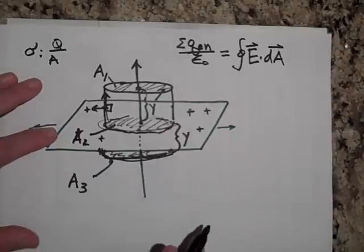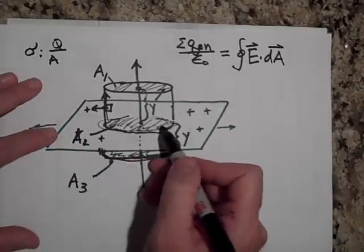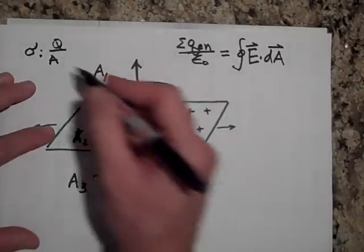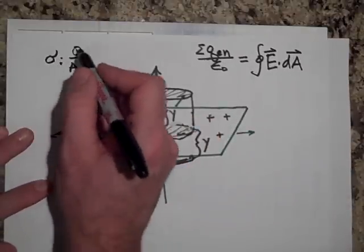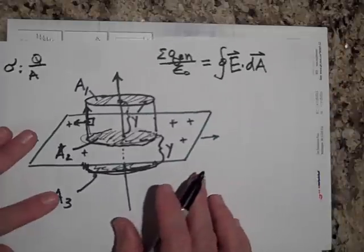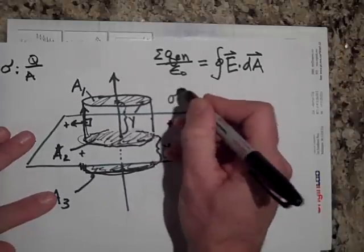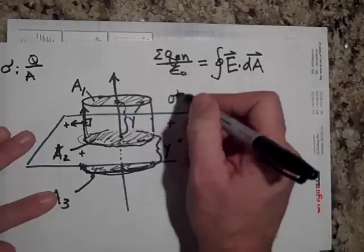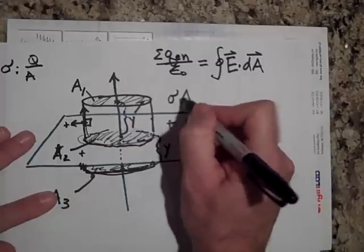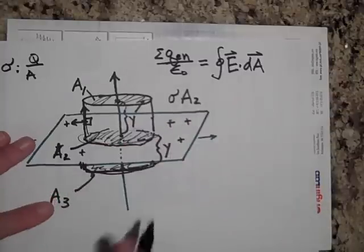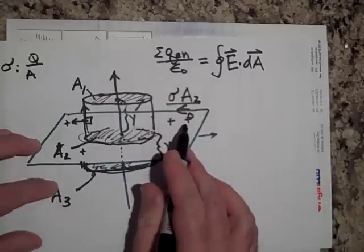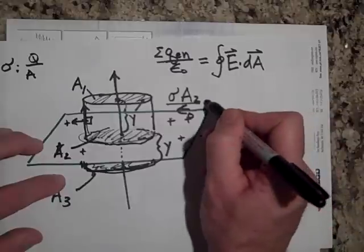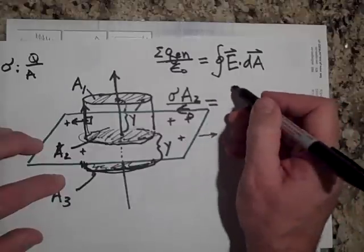Okay. Well, the charge enclosed is just this charge. And so that's going to be sigma times A. You see how if I bring the A over here, that gives me Q. So sigma times A, but it's going to be sigma times A2. That's the A that I want to use all over epsilon naught. That's an epsilon naught there. It's hard to read, but that's an epsilon naught. And that's equal to E dot DA.